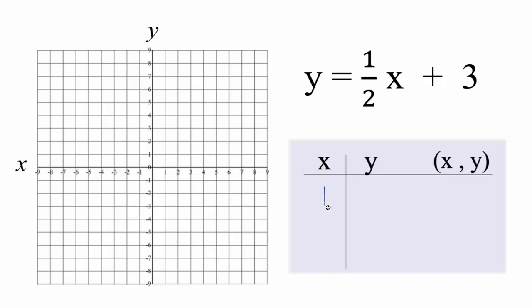If we put 1 in for x, one-half times 1, that's one-half, plus 3, that's three and a half. And we want to choose values that'll show up on our graph. We don't want stuff way out here.